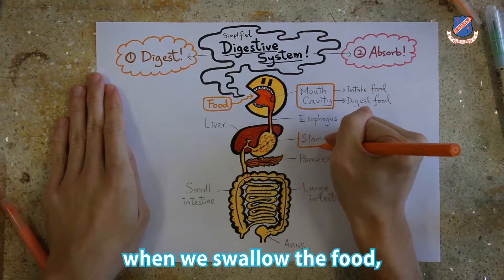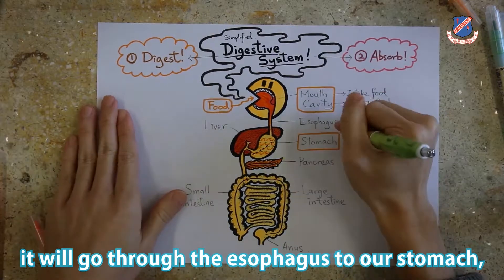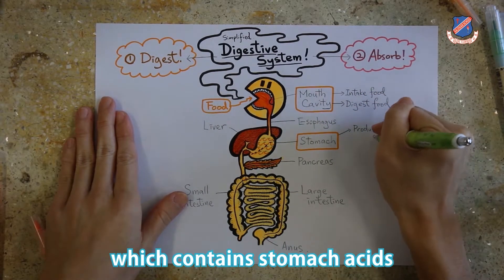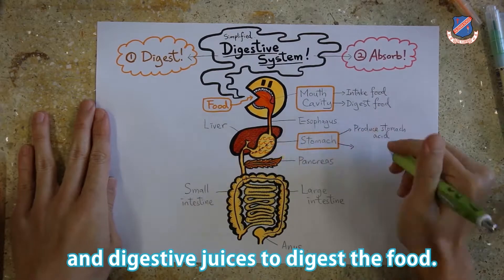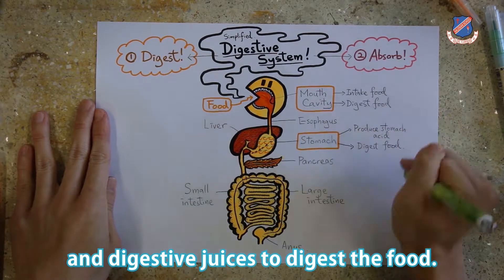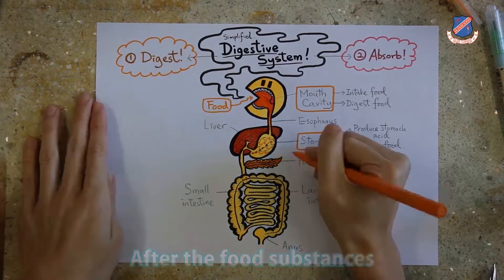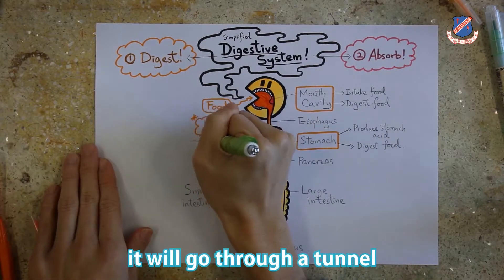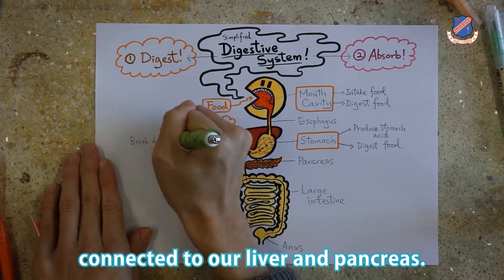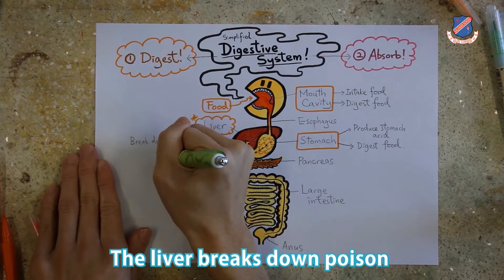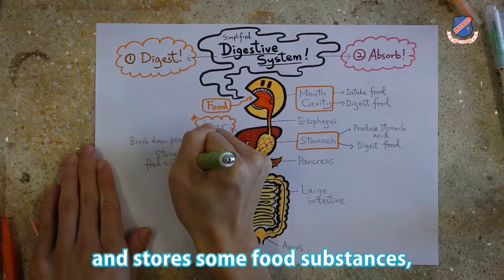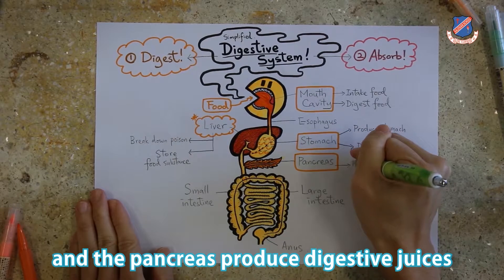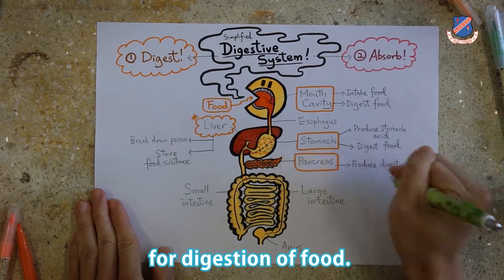Afterwards, when we swallow the food, it will go through the esophagus to our stomach, which contains stomach acids and digestive juice to digest the food. After the food substances leave the stomach, it will go through a tunnel connected to our liver and pancreas. The liver breaks down poison and stores some food substances, and the pancreas produces digestive juice for digestion of food.